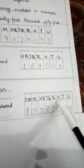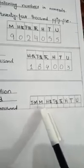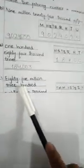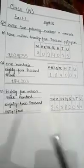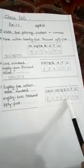Part C is eighty-five million, three hundred, eighty-two thousand, fifty-four. Eighty-five million means we draw the block up to ten million: unit, tens, hundred, thousand, ten thousand, hundred thousand, million, and ten million. Eighty-five goes in ten million and million. Three hundred goes in hundred. Eighty-two thousand goes in ten thousand and thousand. Fifty-four: hundred is missing so we put zero, then fifty-four. After three numbers, we put a comma like that.